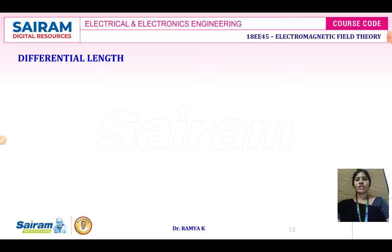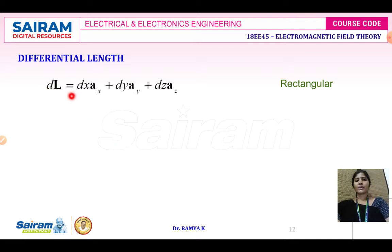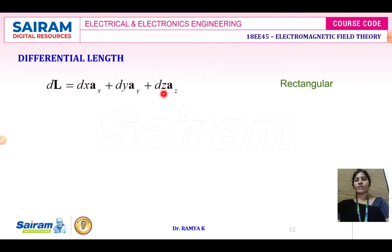The differential elemental length in the Cartesian coordinate system is DL = DX·Ax + DY·Ay + DZ·Az, where Ax, Ay, and Az are unit vectors in the respective directions of X, Y, and Z. This is the representation of the differential elemental length in the Cartesian or rectangular coordinate system.